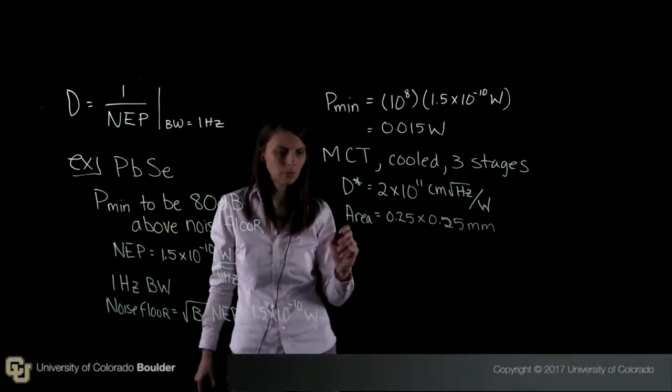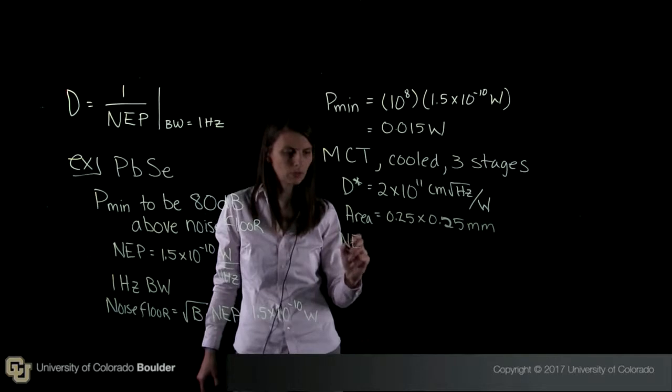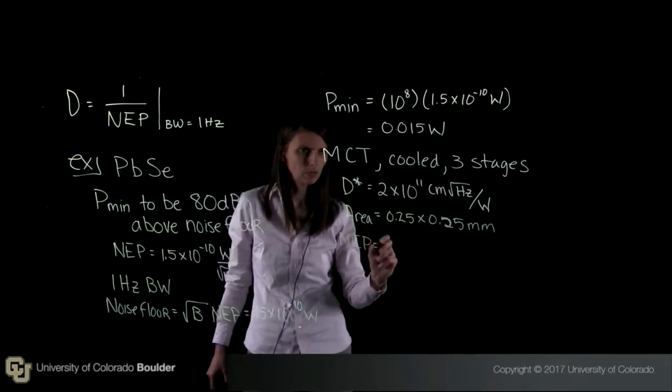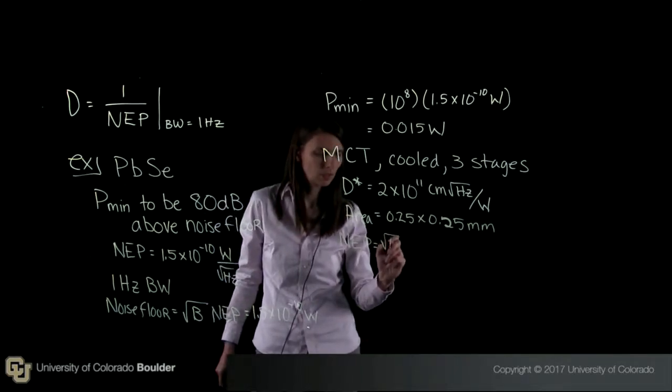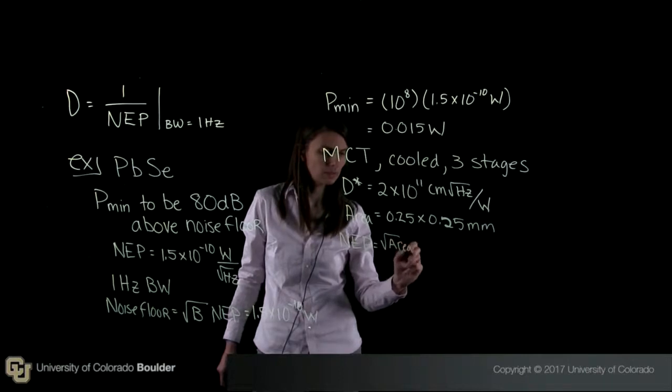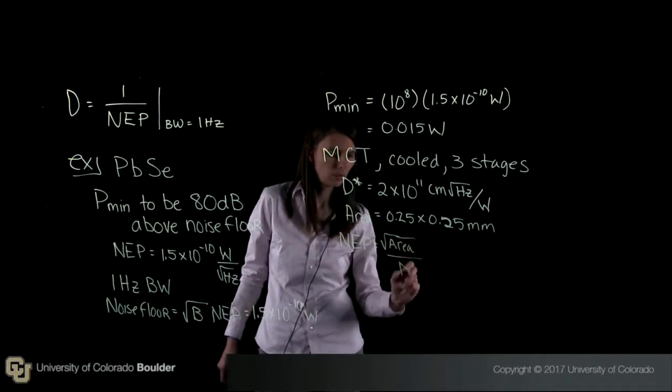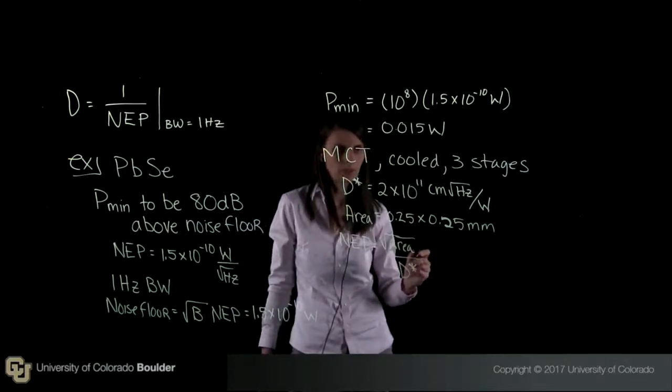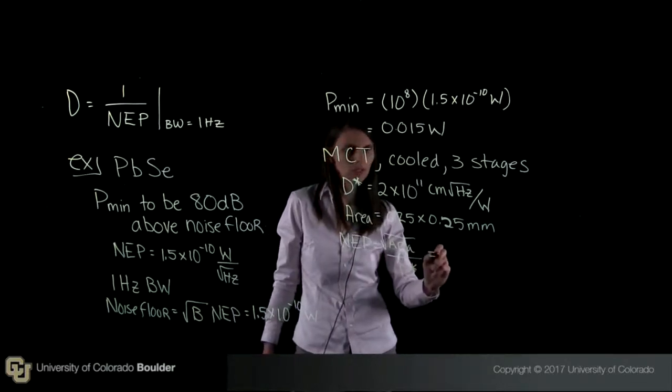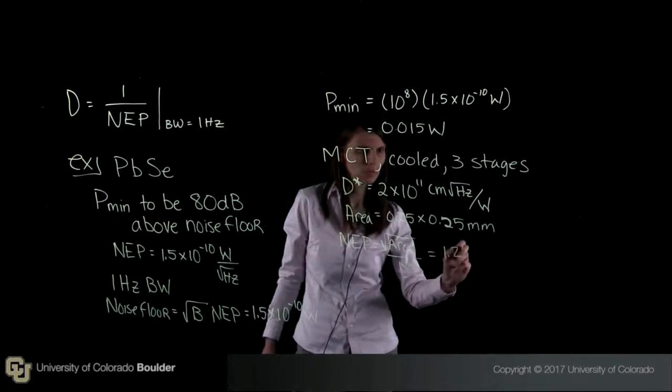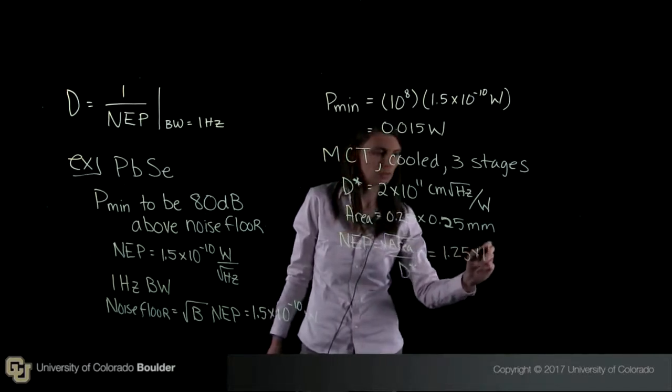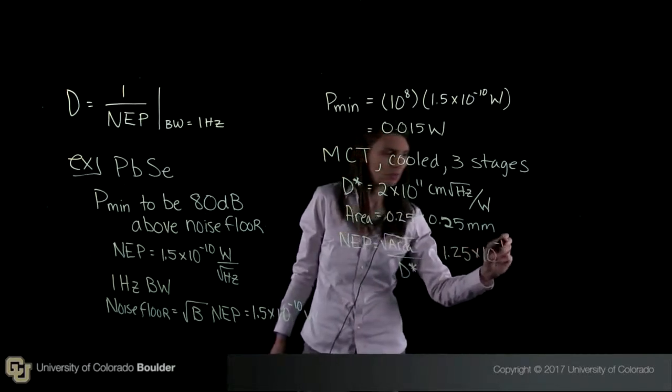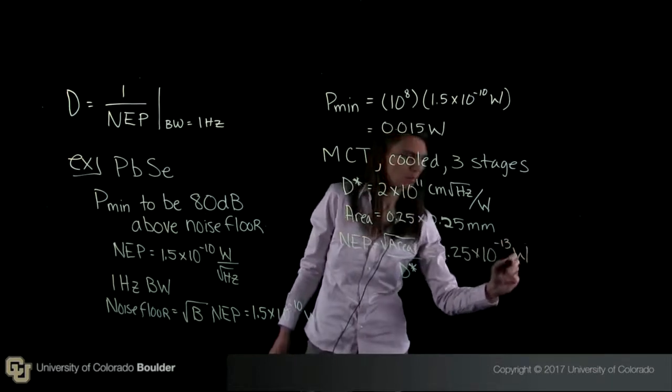And so we can find the noise equivalent power essentially by taking the square root of the area divided by d star. And let's assume also that we have a 1 hertz bandwidth. So here we're going to end up with 1.25 times 10 to the minus 13 watts per root hertz.